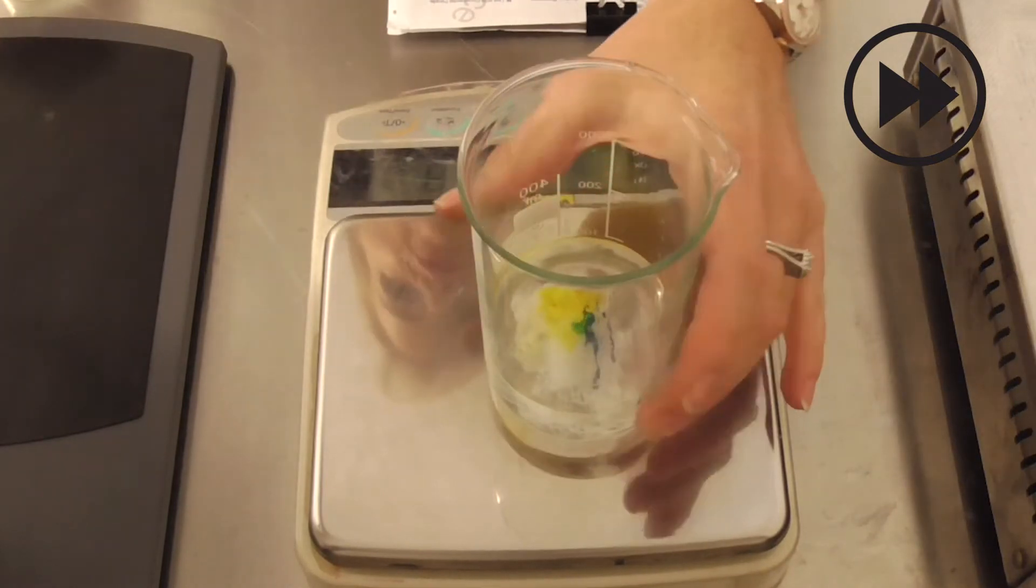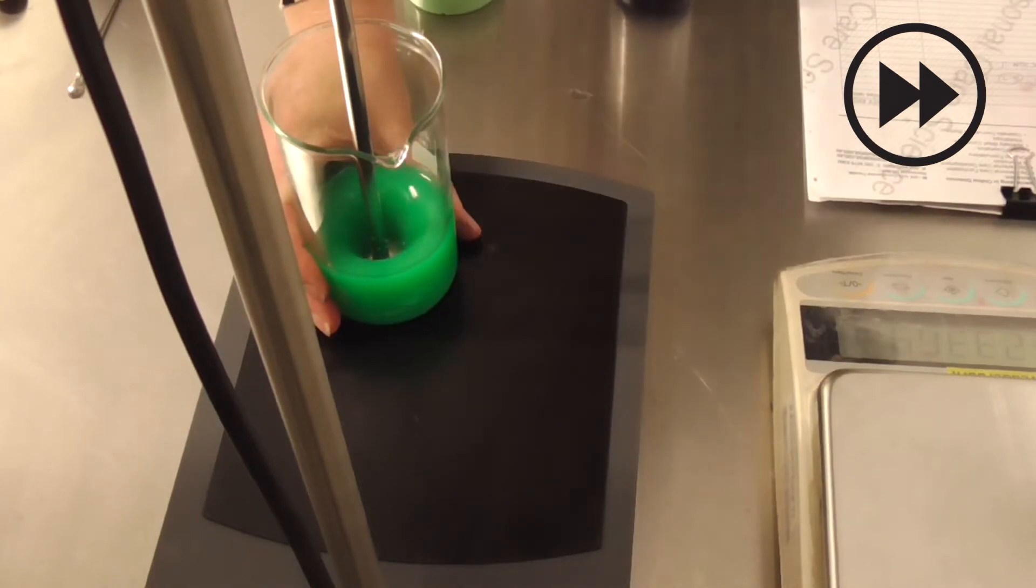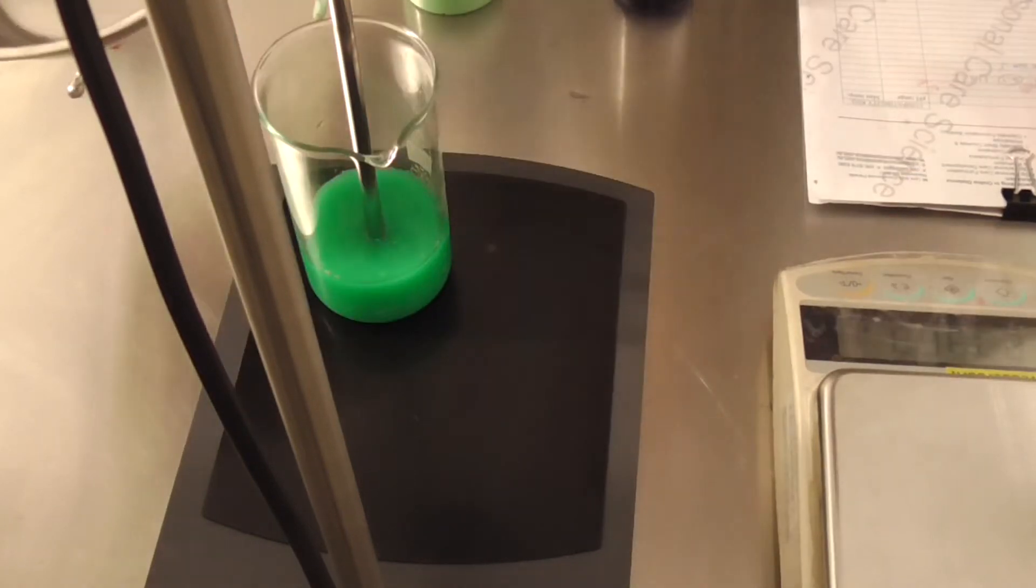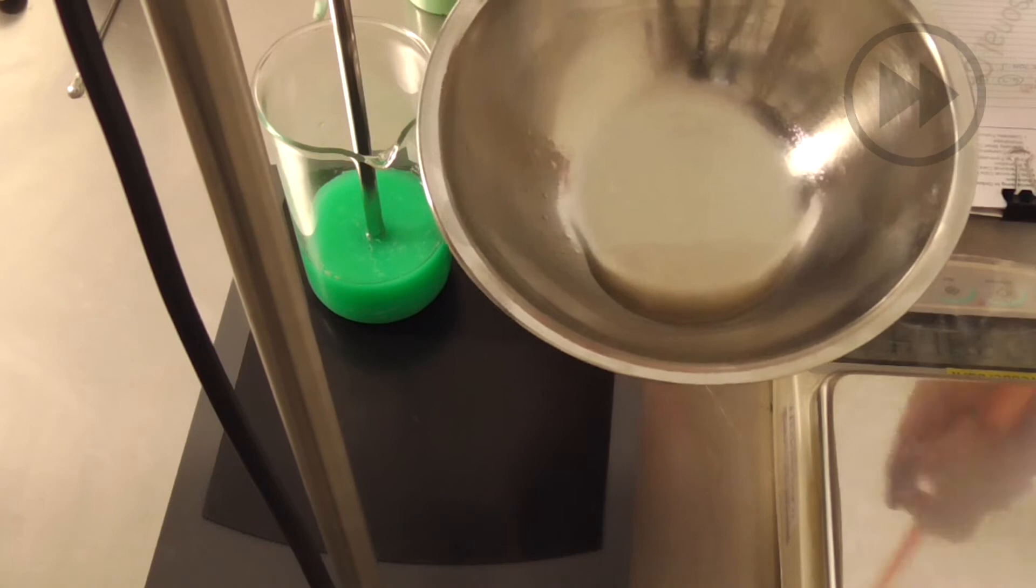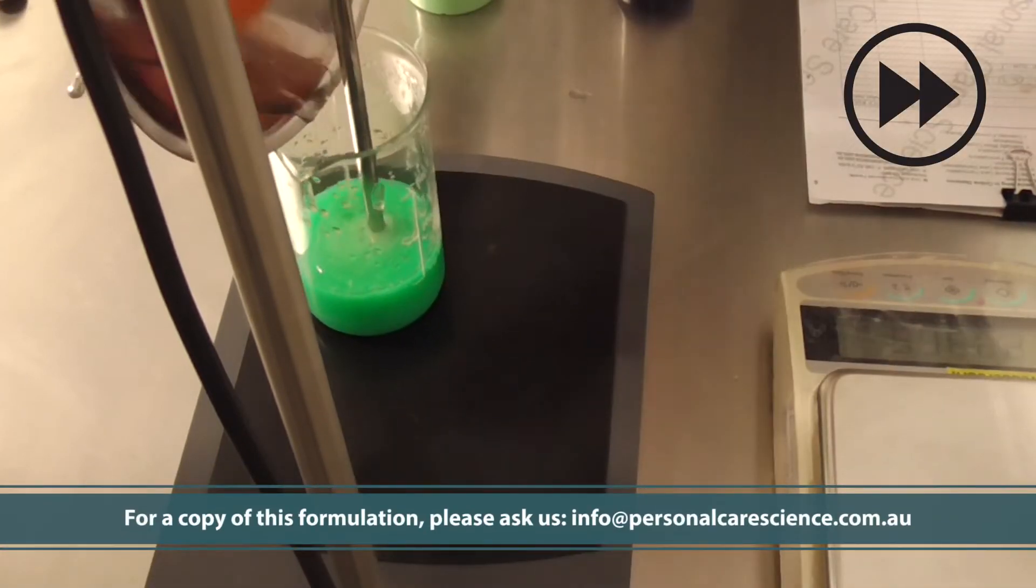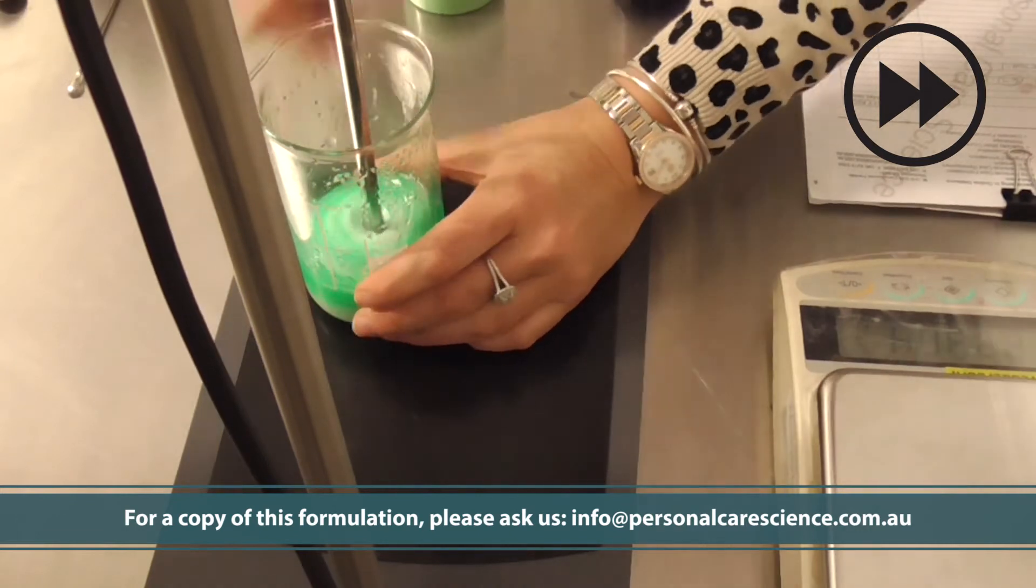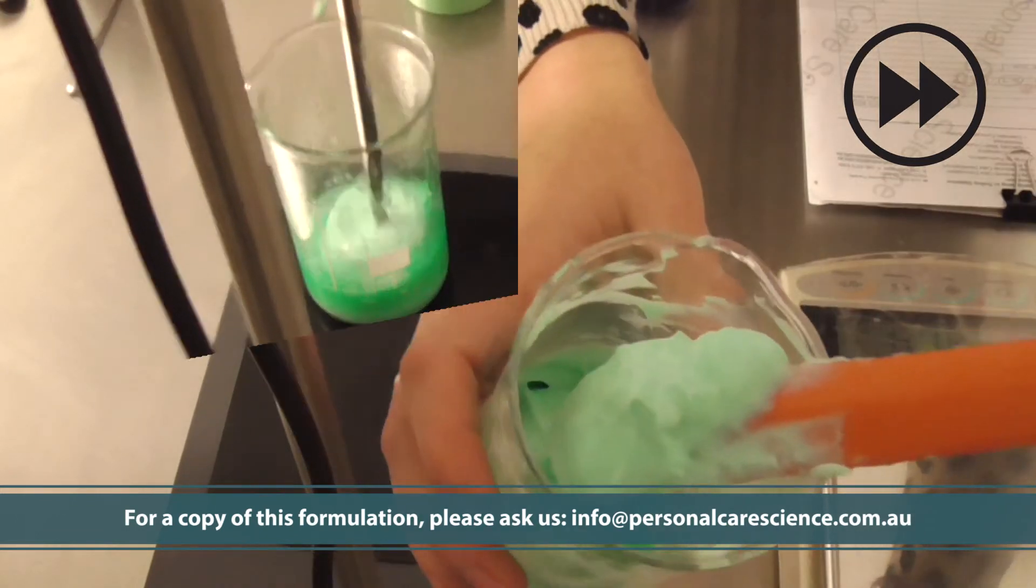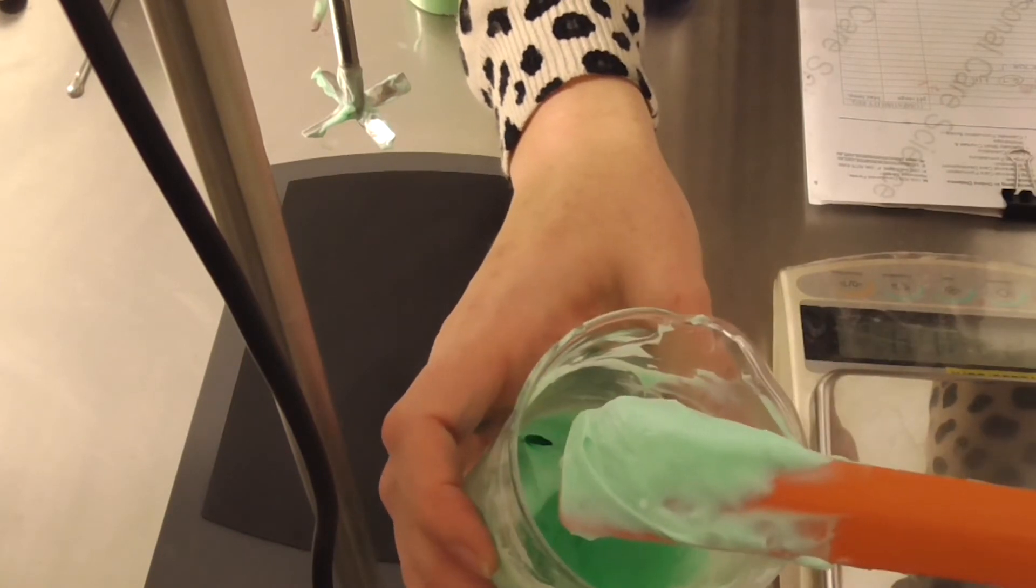Now we stir. And to this we add the oil phase. Now I've already prepared and blended the oil phase ready for it to be added. Continue stirring until your homogeneous emulsion forms.